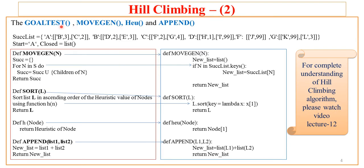Now let us see the sub-functions used by hill climbing: Goaltest, Moogen, the heuristic function, and the Append function. First we look at Moogen. The Moogen function takes any node N and tries to find the successors of that given node N. It searches the list of successors for that node, and if it exists, retrieves the children of node N, stores them in the list variable SUCC, and returns that.